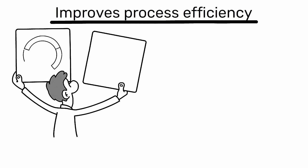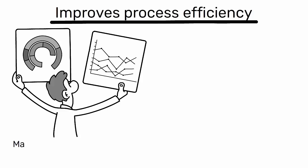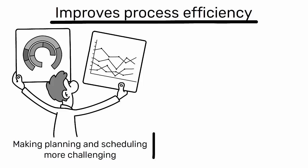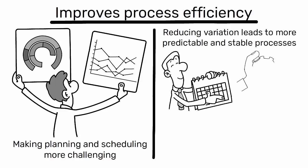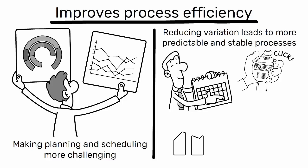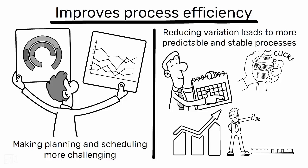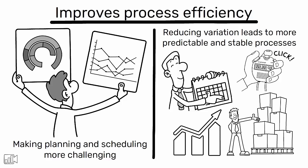When there's high variation, it's harder to predict process performance, making planning and scheduling more challenging. Reducing variation leads to more predictable and stable processes, which can improve scheduling accuracy, reduce lead times, and increase throughput.